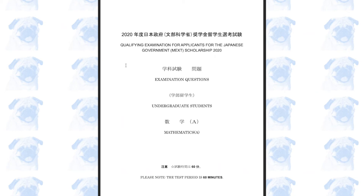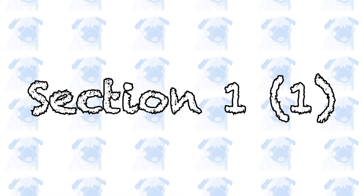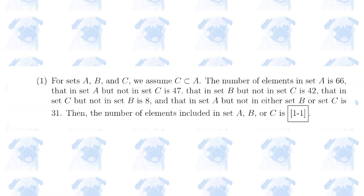This is the 2020 MEXT Undergraduate Mathematics A paper. Let's begin. Section 1, Number 1.